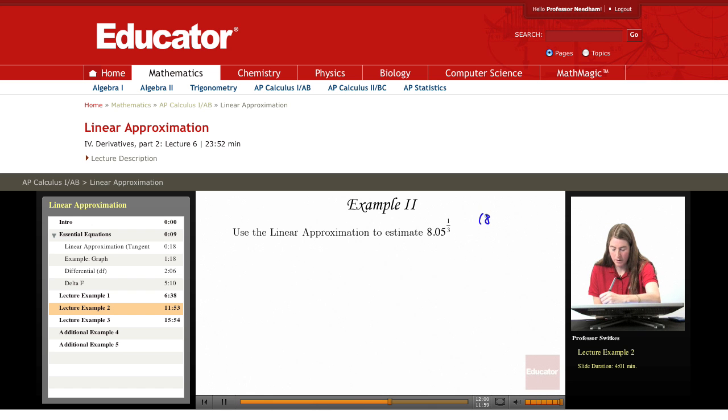We know the cubed root of 8 is 2, and so we're looking at a delta x value of 0.05 to have us investigate cubed root of 8.05.